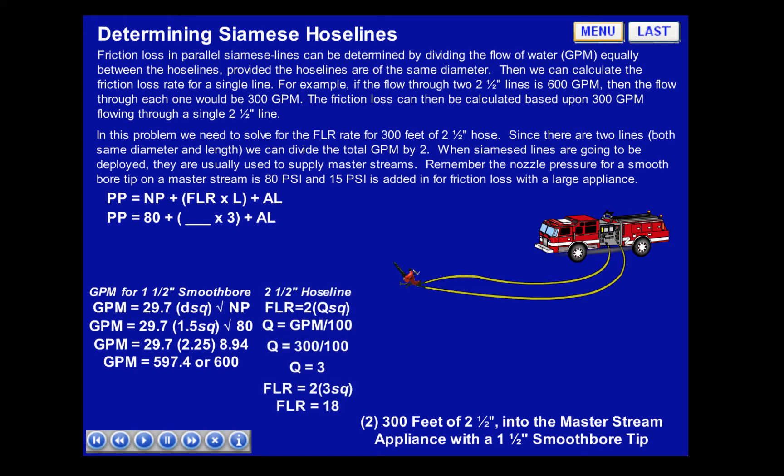For the 2.5-inch hose lines, we determine the friction loss rate using FLR equals 2Q squared, where Q equals GPM over 100. In this case, Q equals 300 divided by 100, so Q equals 3. We use 300 because it is half of 600, the total GPM for two lines going into the Master Stream. So FLR equals 2 times 3 squared, which equals 18 per 100 feet of hose.